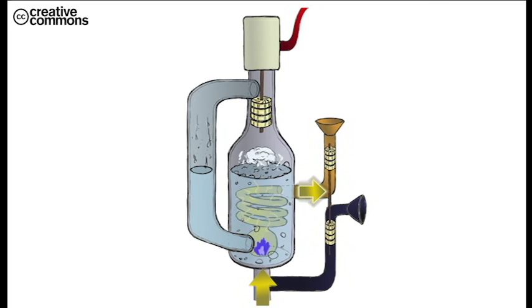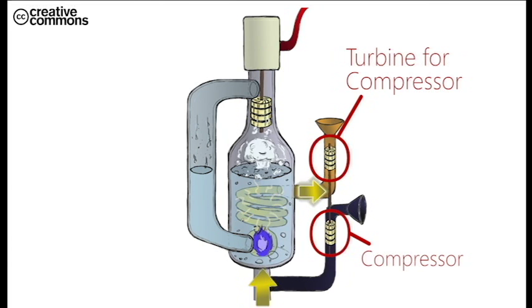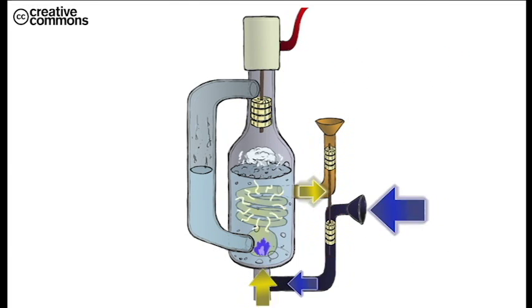Leaving exhaust gases turn a turbine, which is directly connected to a compressor, which draws in the air supply needed for complete combustion of methane. This reuses the energy that would otherwise be lost.